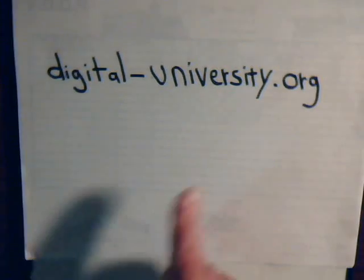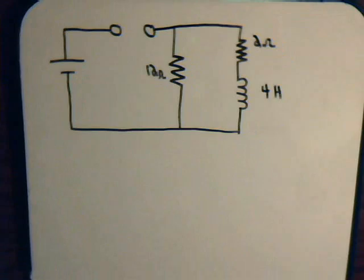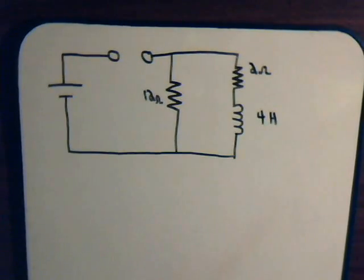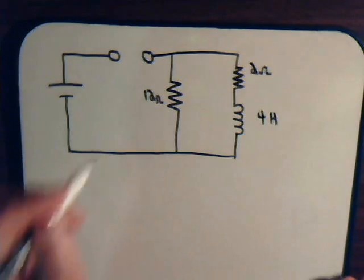This is video 58 in our series on electrical circuit analysis. The playlist for all of our videos is at the website digital-university.org. In this video, we want to consider again a very simple circuit and pick up where we left off in the last video, video 57.